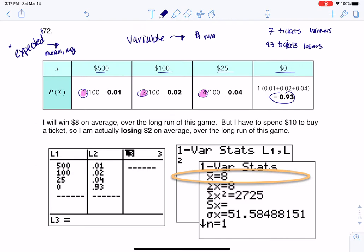So now that I've made my PDF, right, because it's a discrete numerical variable, make that PDF. All right, I go ahead and I run one of our stats, L1, L2.